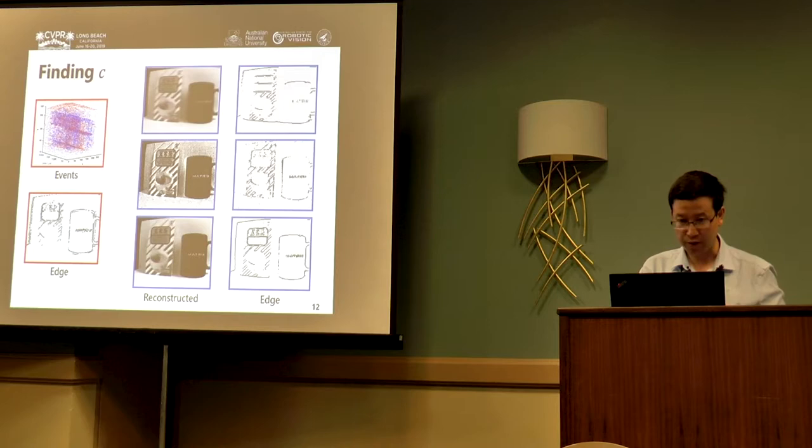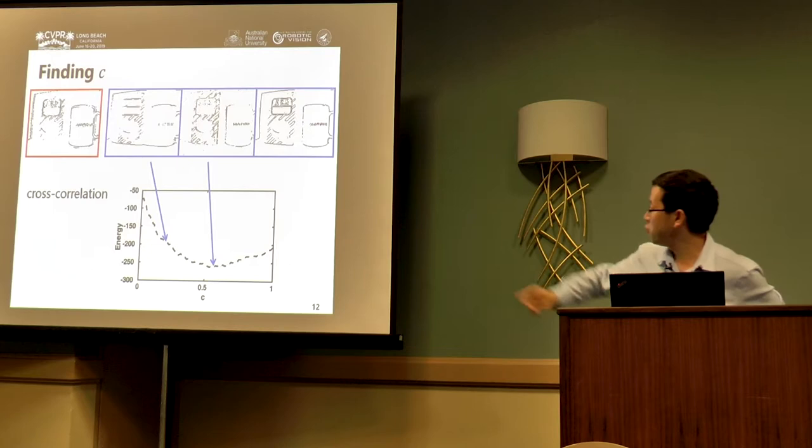You re-extract your image and can compute the gradient or edge. This edge can also be output from the event things. Basically these things should be highly correlated. With this one, we can estimate our C. Once we get this one, we have our solution.